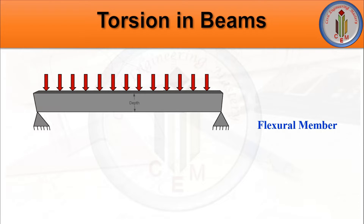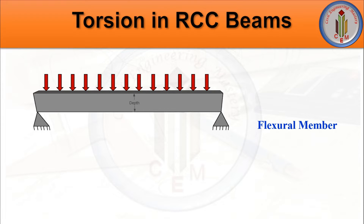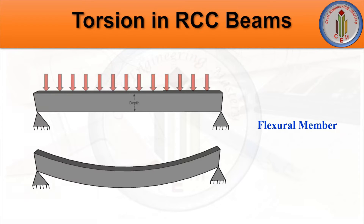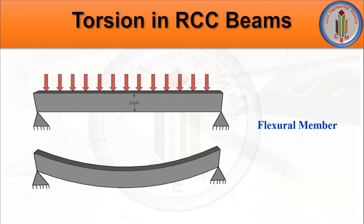Beam is a horizontal structural member predominant in flexure, that is bending. When load is applied on the beam, it tends to bend. In addition to bending moment, there is also shear force developing in the beam. We provide longitudinal reinforcement to resist the bending moment, also called main reinforcement, and we provide stirrups to resist the shear force, also called transverse reinforcement. So beams have longitudinal and transverse reinforcement to resist bending moment and shear force.